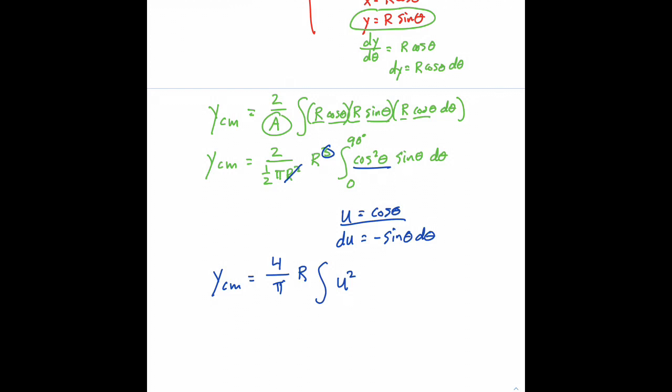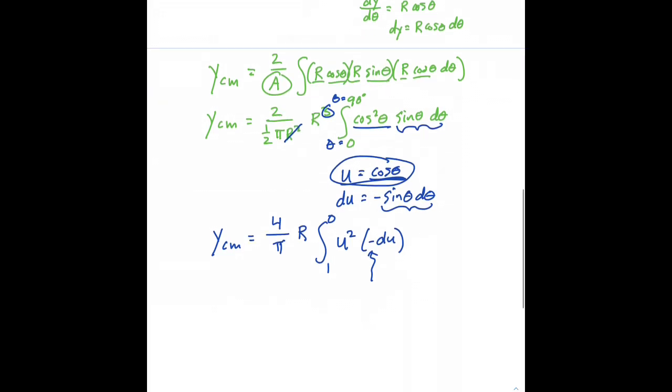So the integral of u² and then we have a sine theta dθ, there's a sine theta dθ so this is a negative du. And then our limits of integration change, we are integrating from theta equals 0 to theta equals 90, that means we're going from u equals, well what's the cosine of 0? That's 1 and then we're going to 90 degrees and the cosine of 90 is 0 so we're integrating from 1 to 0. We could get rid of this negative sign by switching our limits of integration so let's do that.